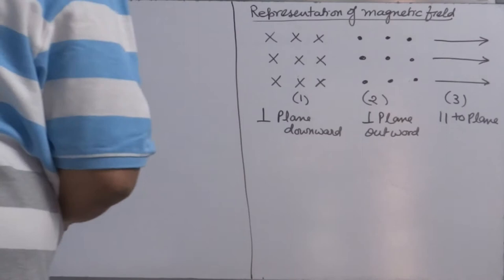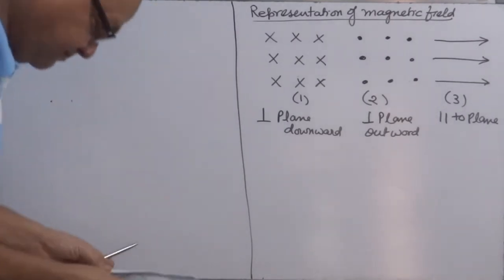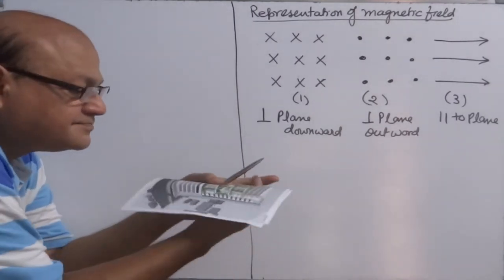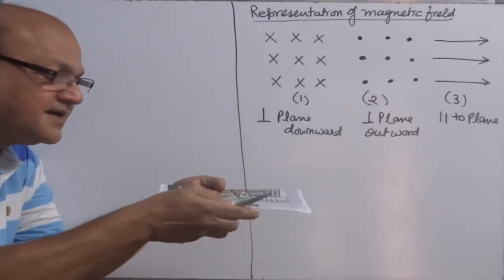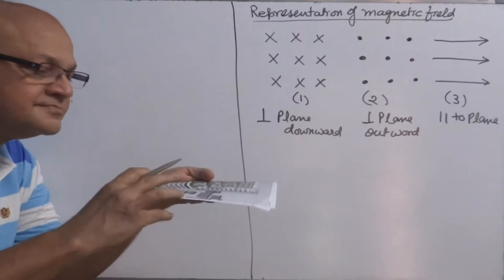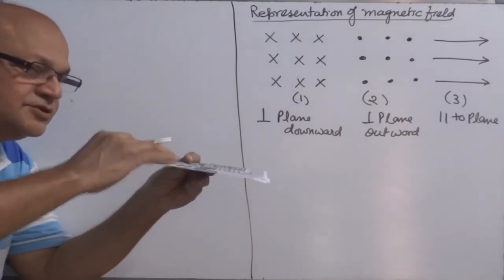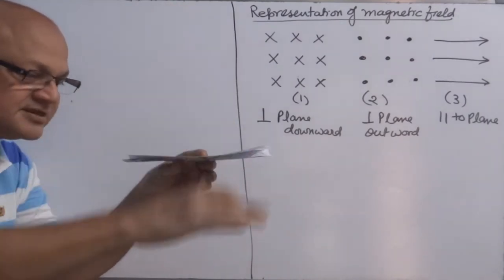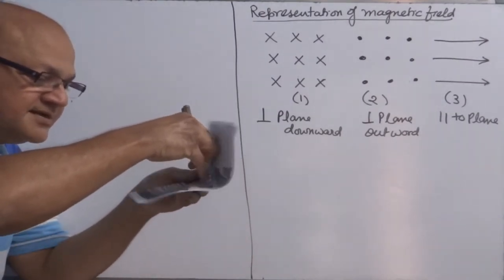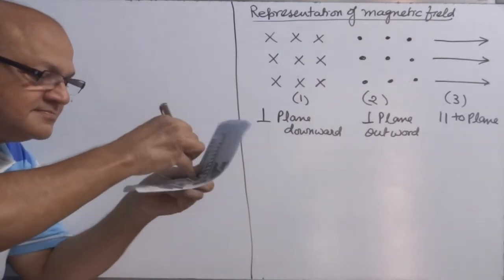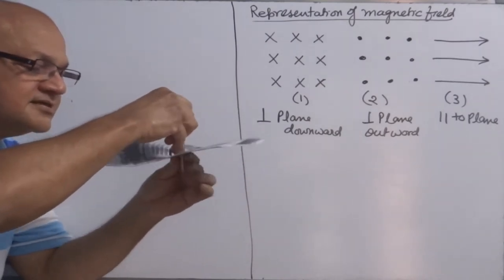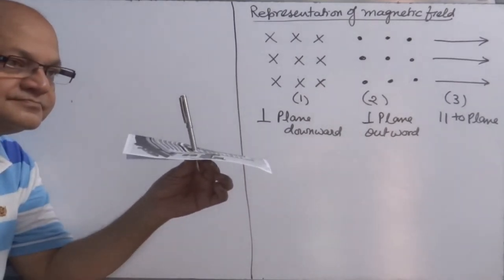What is perpendicular to the plane and parallel to the plane? This is the plane. If I mark magnetic field lines on this like this — cross, cross, cross — it means the North Pole is above this plane, South Pole is below this plane, and magnetic field lines are penetrating through this plane like this.